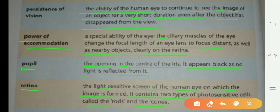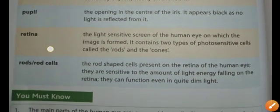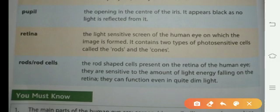Rods: the rod-shaped cells present on the retina of the human eye. They are sensitive to the amount of light energy falling on the retina. They can function even in quite dim light.